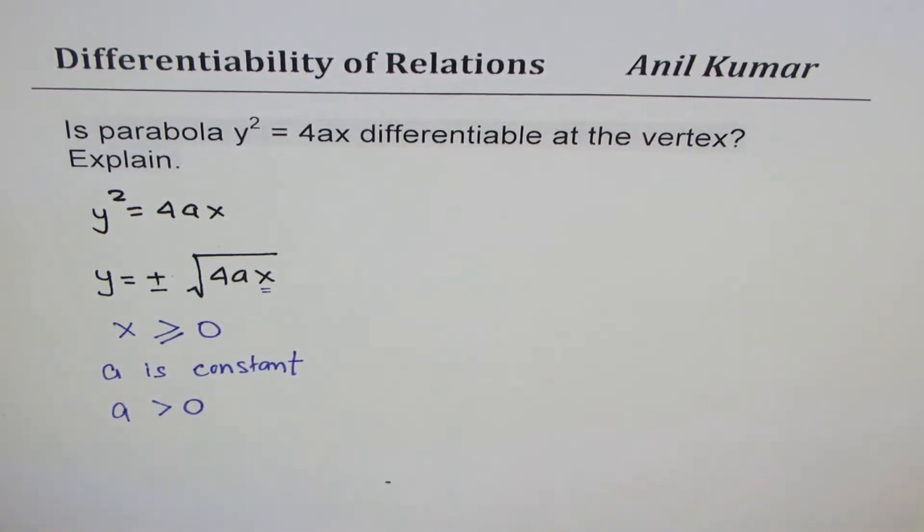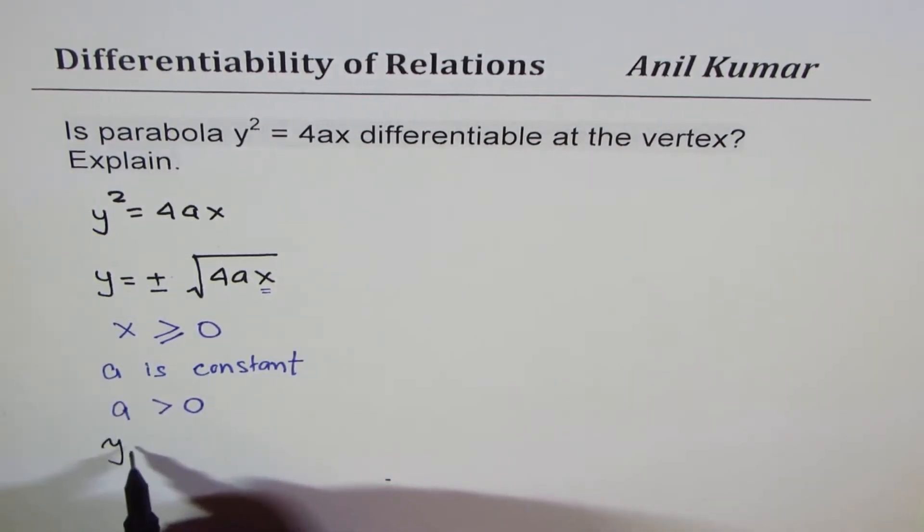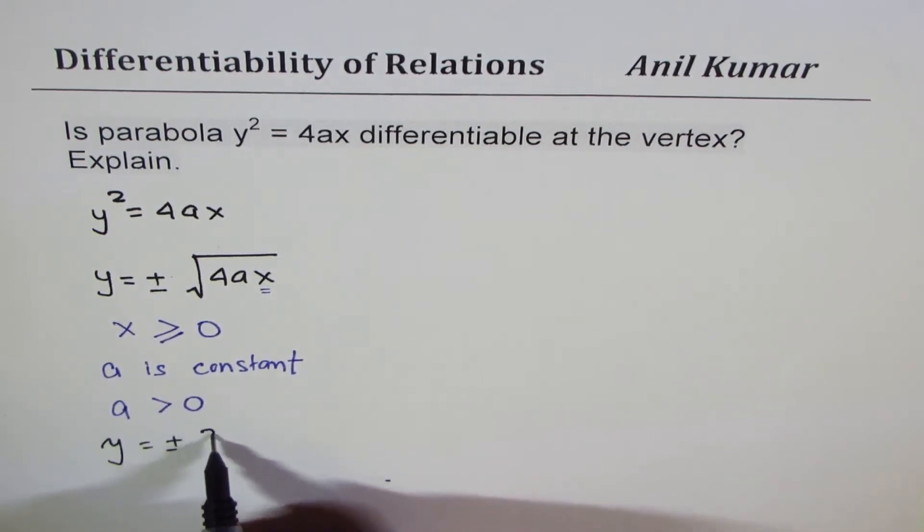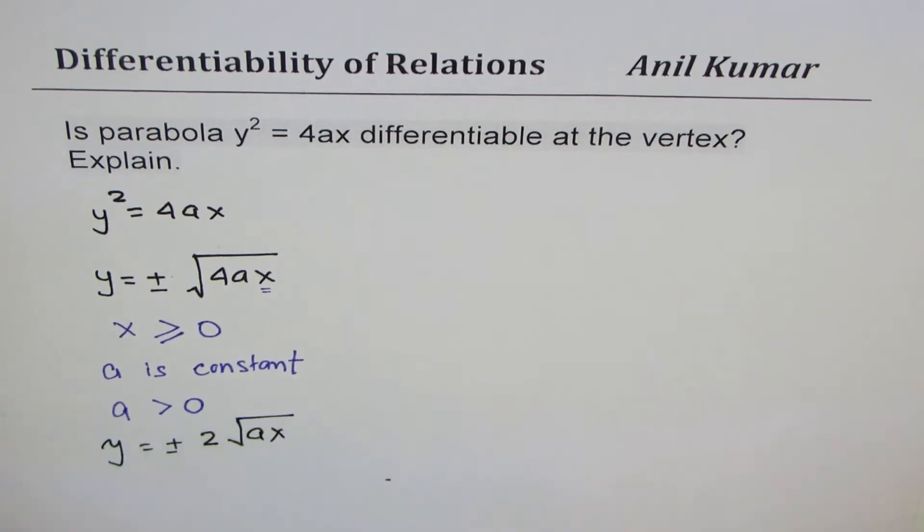Some of you could rewrite this equation as y = ±2√(ax).